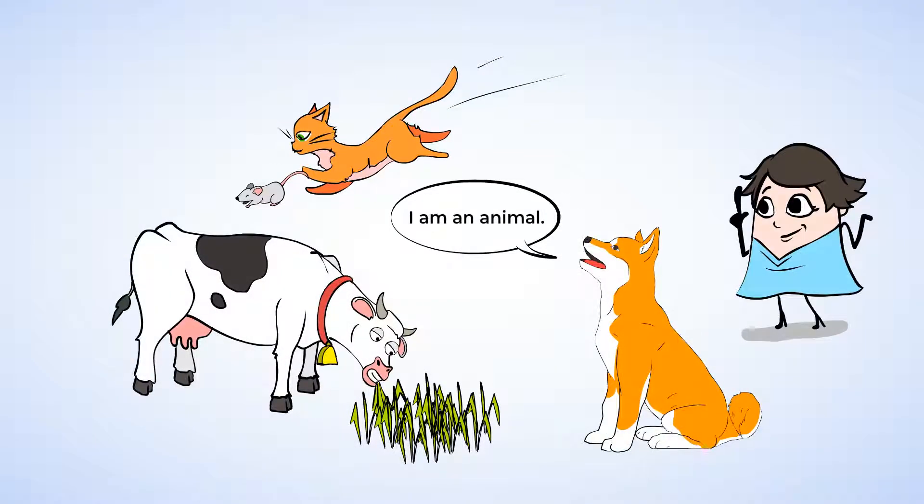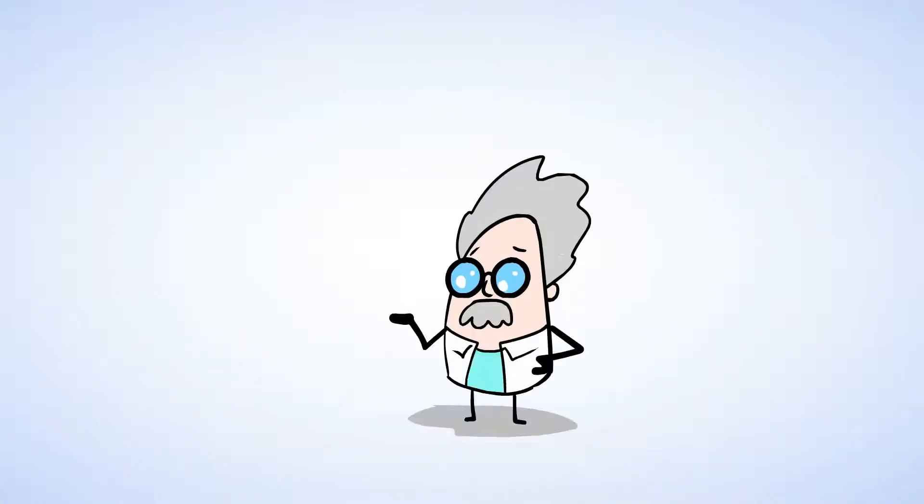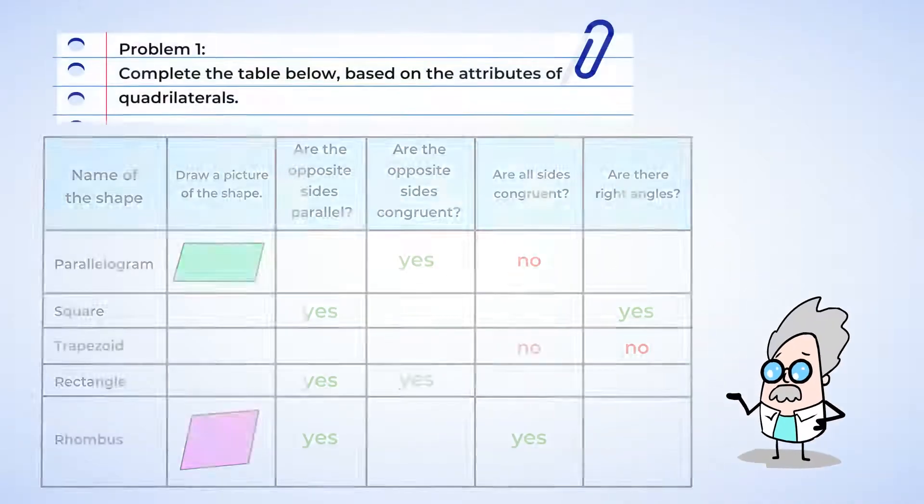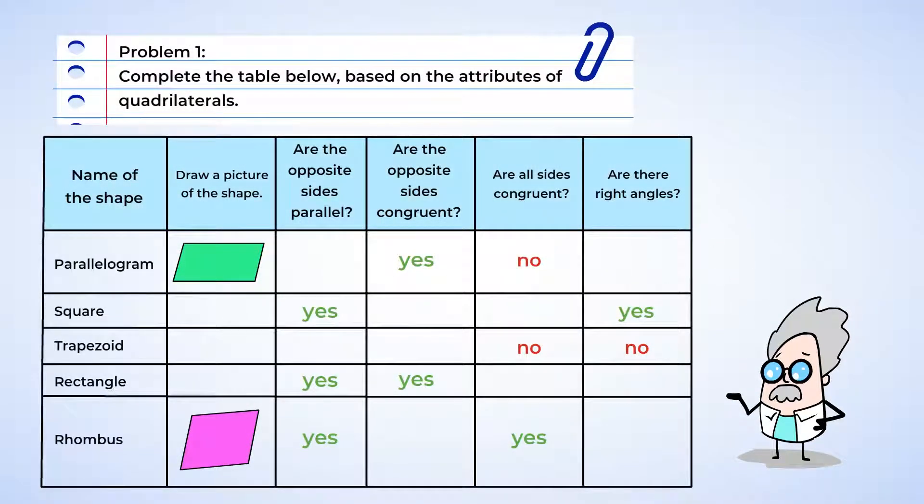Now let's get creative and draw some shapes. Okay, it's time to put our knowledge of shapes to the test. Let's complete this table based on the different attributes of quadrilaterals.